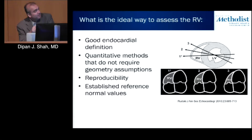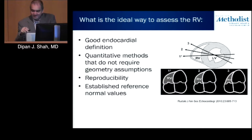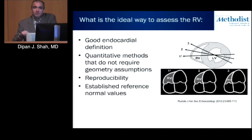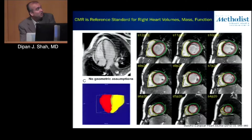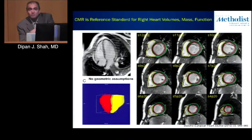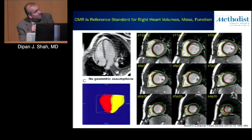This is the same patient, but depending on whether the cut is a little more anterior versus a little more inferior, the RV can look much bigger or much smaller. We want a technique that doesn't give us artificial values simply based on the location of the cut. CMR is helpful because we can actually measure right ventricular volumes in both end-diastole and end-systole by acquiring serial short axis slices.